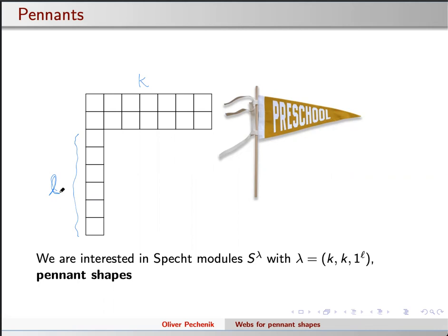We've been calling these flag-shaped partitions for a while because it looks like a flag — you have this thing and it's stuck on a flagpole. But now with all the flag varieties floating around, that seems like a poor choice of names, so they're going to be pennants: particularly long, skinny flags on flagpoles. This was the only picture I could find online of something that actually had the flagpole attached, so it has to be preschool, apparently.